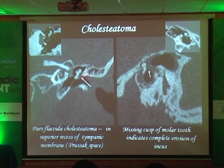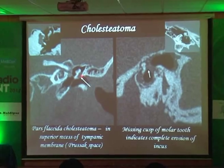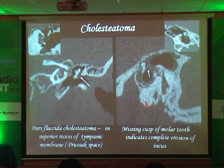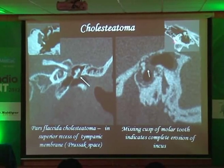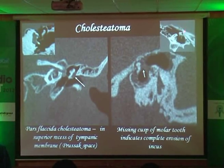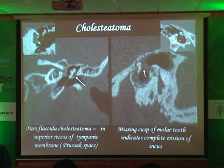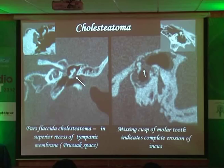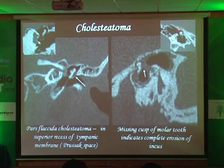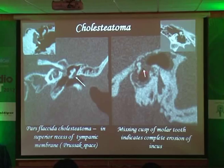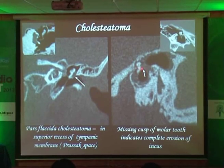This patient also had erosion of the scutum. The scutum is beautifully seen in normal cases, but here there is erosion. Dr. Manoj also mentioned the molar tooth appearance — anteriorly is the malleus, posteriorly is the incus, giving a molar tooth appearance. This cholesteatoma has eroded the incus, causing loss of the molar tooth sign. You see the malleus intact, but the incus is completely eroded.